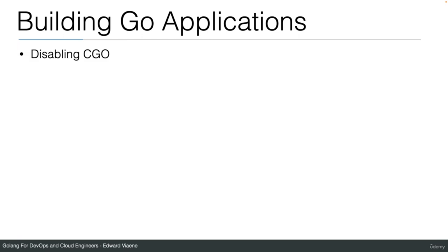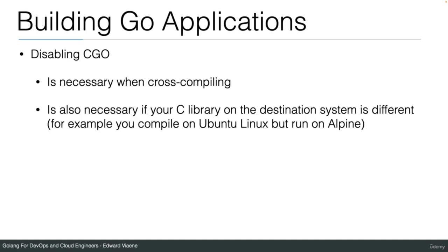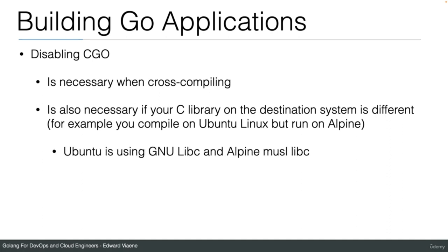Disabling CGO is necessary when cross-compiling, and also when the C library on the destination system is different. For example, if you compile on Ubuntu Linux but want to run on Alpine Linux, you wouldn't think you need to cross-compile since it's still a Linux binary — but it won't work because Ubuntu uses GNU libc and Alpine uses musl libc.